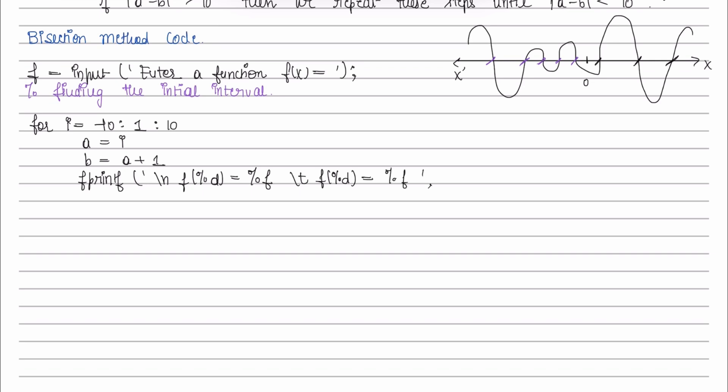Here this print statement is printing the function value at a and the function value at b. I hope you know that this percent d is for a and this percent f is for f of a. Similarly, this percent d is for b and this percent f is for f of b.